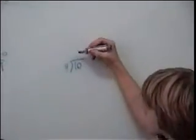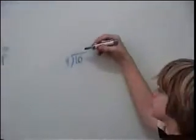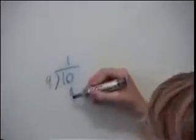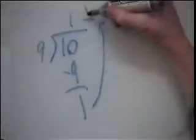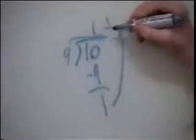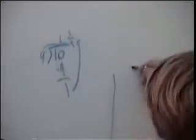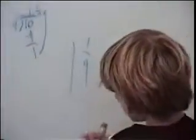So, remember what you have to do. Ten divided by nine. Nine goes into ten how many times? One time. So, you go 10 minus 9 equals 1. And remember, this number goes to the top and this number goes to the bottom. So, your answer is one and one ninth.